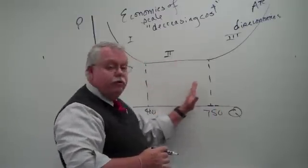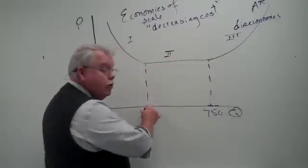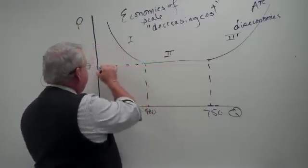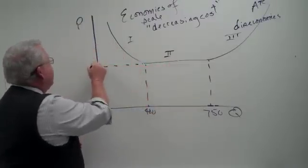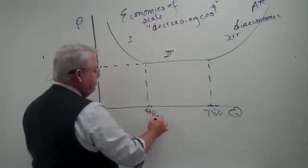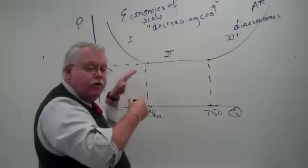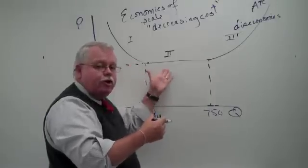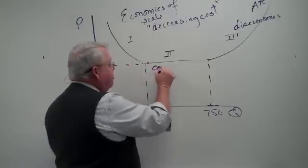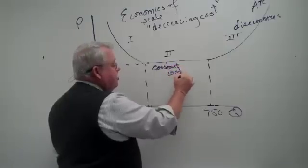What's going on as I produce in this range? Well, these are constant costs. That is, when I produce 400 units and I read up, I say, well, each unit cost me $9. And if I produce 401 units, well, each unit cost me $9. So it's costing me the same amount of money for each additional unit, what we'll call constant costs. And sometimes called constant returns to scale.